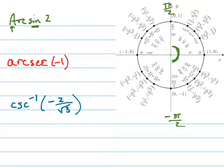And so where is the sine equal to 2? Well that's kind of a trick problem, because the sine is never equal to 2. So this equals no solution.